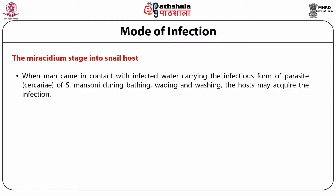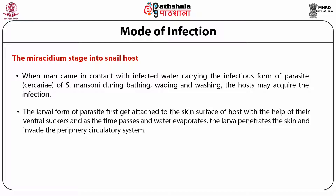The mother and daughter sporocysts are the two generations of sporocysts. It is the daughter sporocysts which produces the cercaria — an infective larval form — which is released into water after 30 days from the snail host. There are no redia stages. When a man comes in contact with infected water carrying the infectious cercaria of Cystosoma mansoni during bathing, wading and washing, the host may acquire the infection. The larval form of parasite first gets attached to the skin surface of the host with the help of ventral suckers, and as water evaporates, the larva penetrates the skin and invades the peripheral circulatory system.